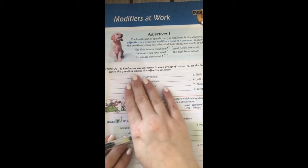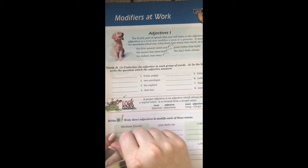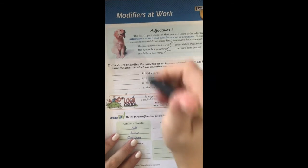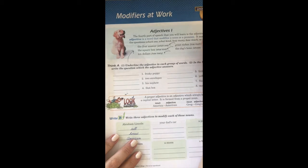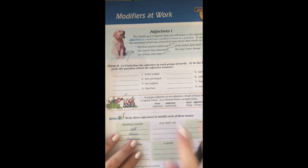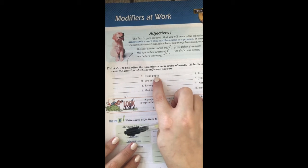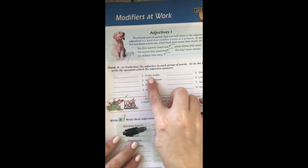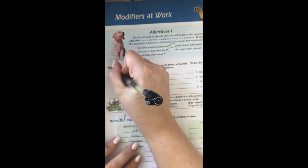Here you're going to underline the adjective in each group of words, and in the blank, write the question which the adjective answers. You'll need to keep looking up at the list of questions until you get the hang of it. For number one, we have 'frisky puppy.' We know that 'frisky' is the adjective because it's telling you what kind of puppy, so we would underline 'frisky.'